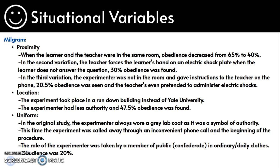The third situational variable was uniform. In the original study, the experimenter always wore a grey lab coat as a symbol of authority. This time, the experimenter was called away by a phone call at the beginning of the procedure, and the role was carried out by a member of the public who was a confederate in daily clothing. Obedience was 20%.